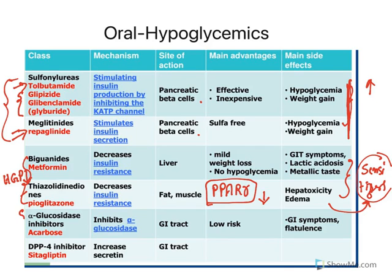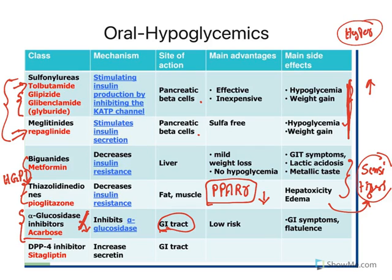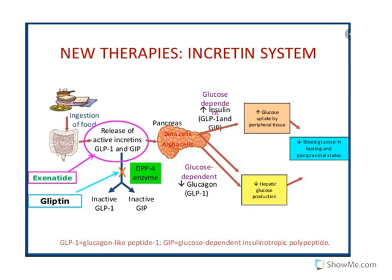Alpha-glucosidase is an enzyme present in the intestine that results in the release of glucose. If this enzyme is inhibited, glucose formation in the GI tract is reduced. If glucose formation is reduced, hyperglycemia will not occur. The drugs in this class are acarbose and miglitol.